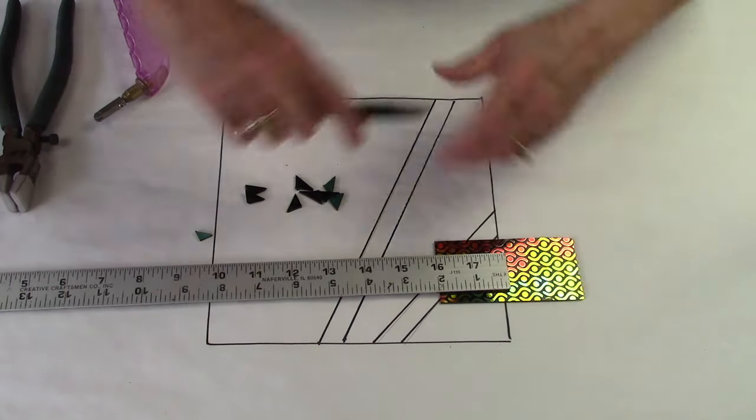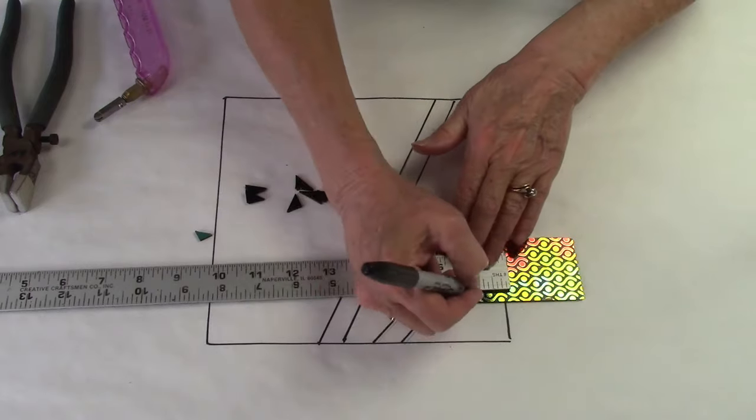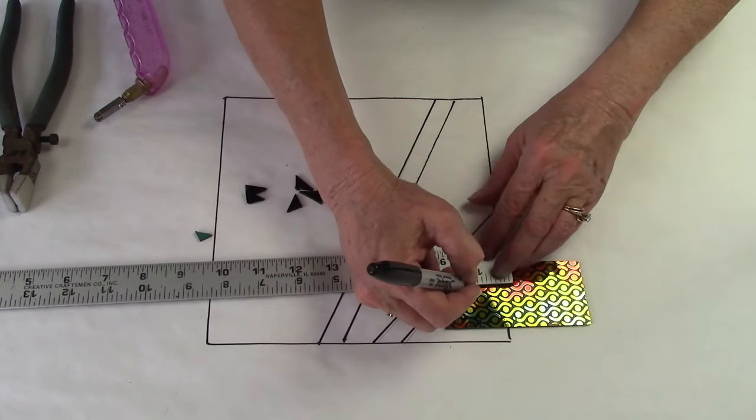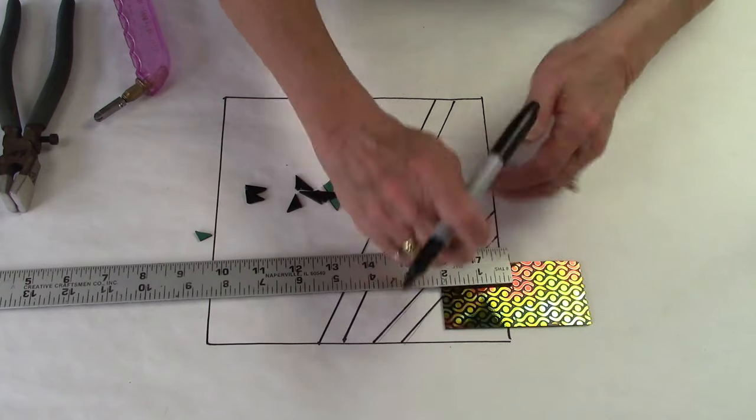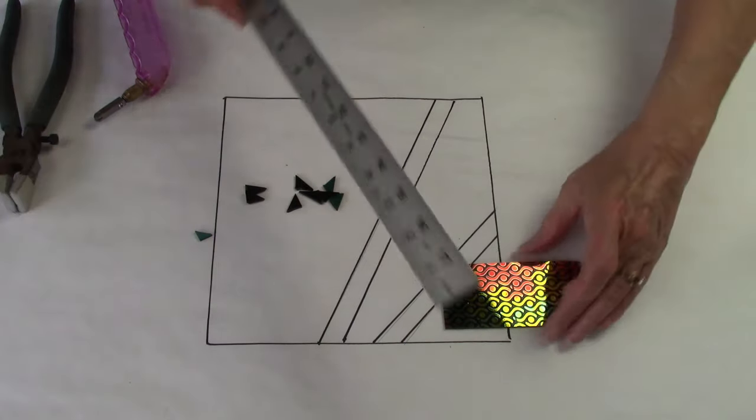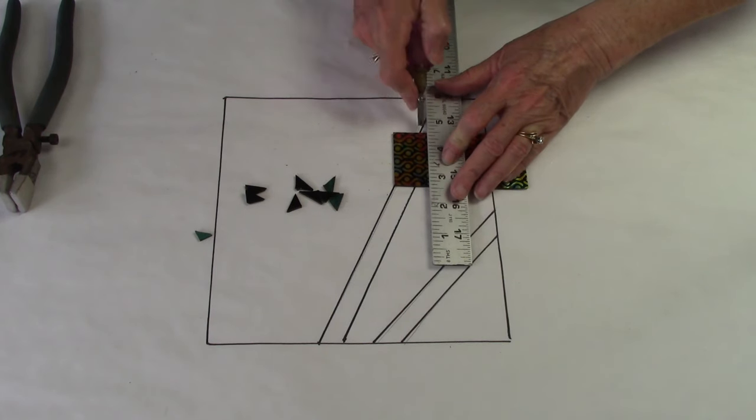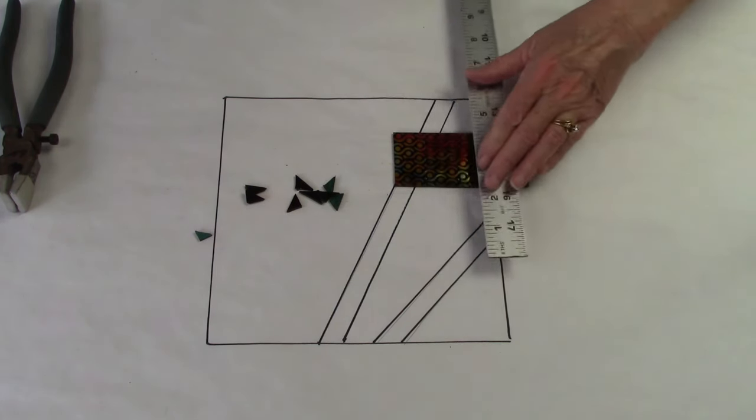Now I'm going to measure in the other direction and mark it at an inch. I'm going to make these one inch squares and then I'm going to put these pieces back together in such a way that the pattern visually flows between the four pieces. It's a really fun thing to do when you're working with a pattern: cut the glass, separate it, and then visually put it back together for the viewer.